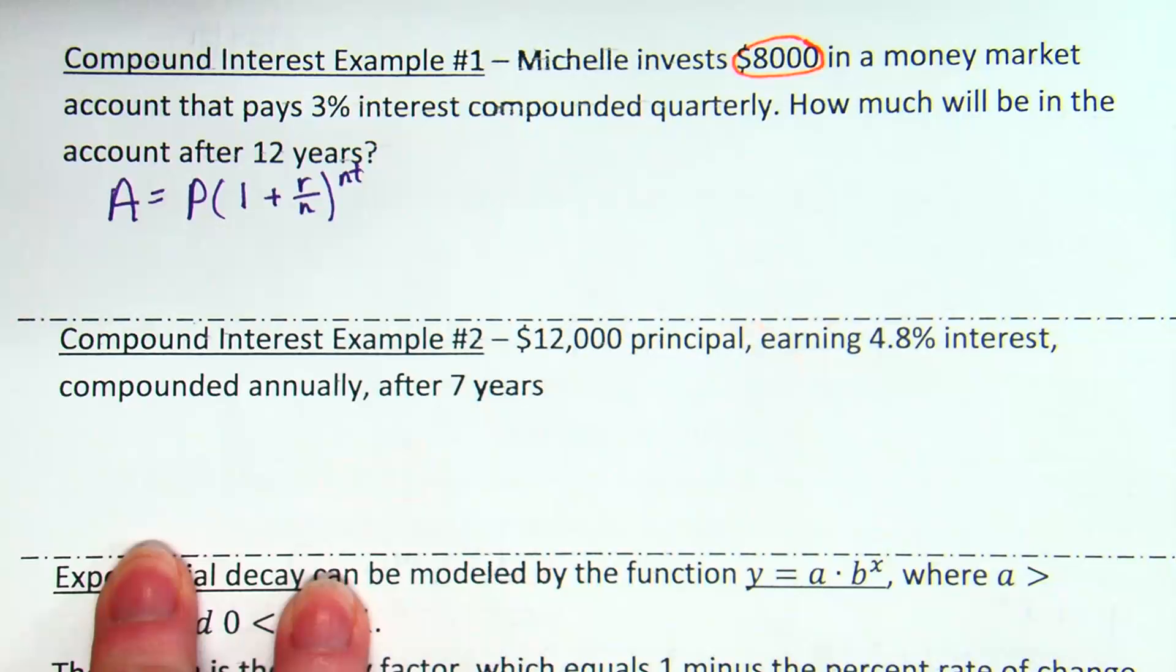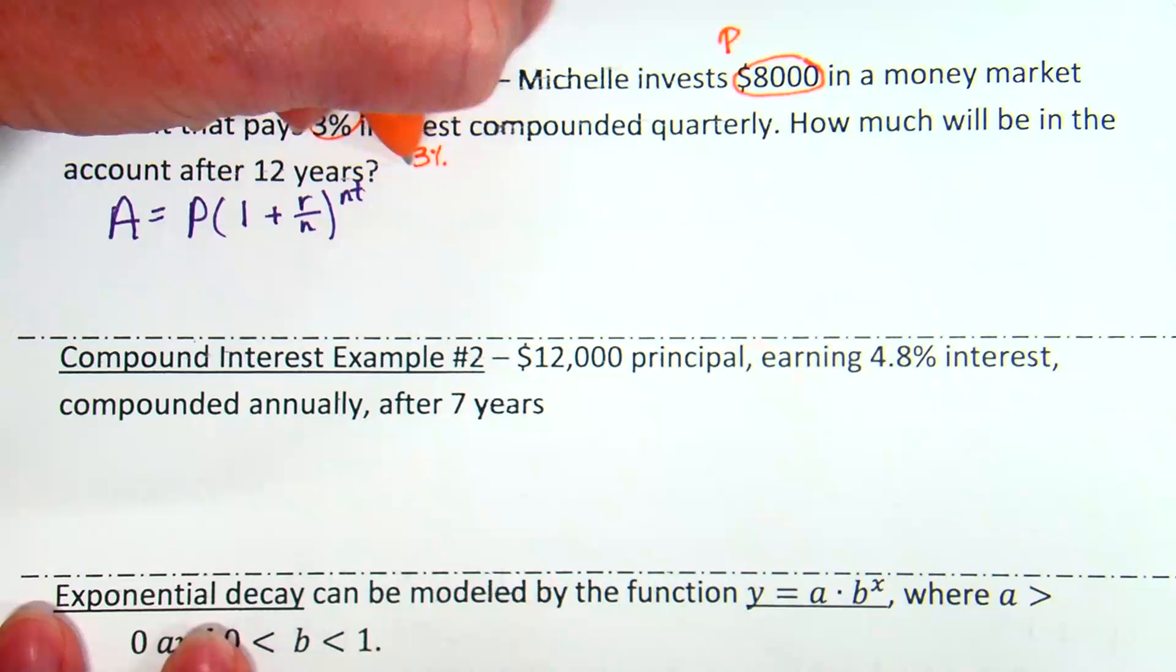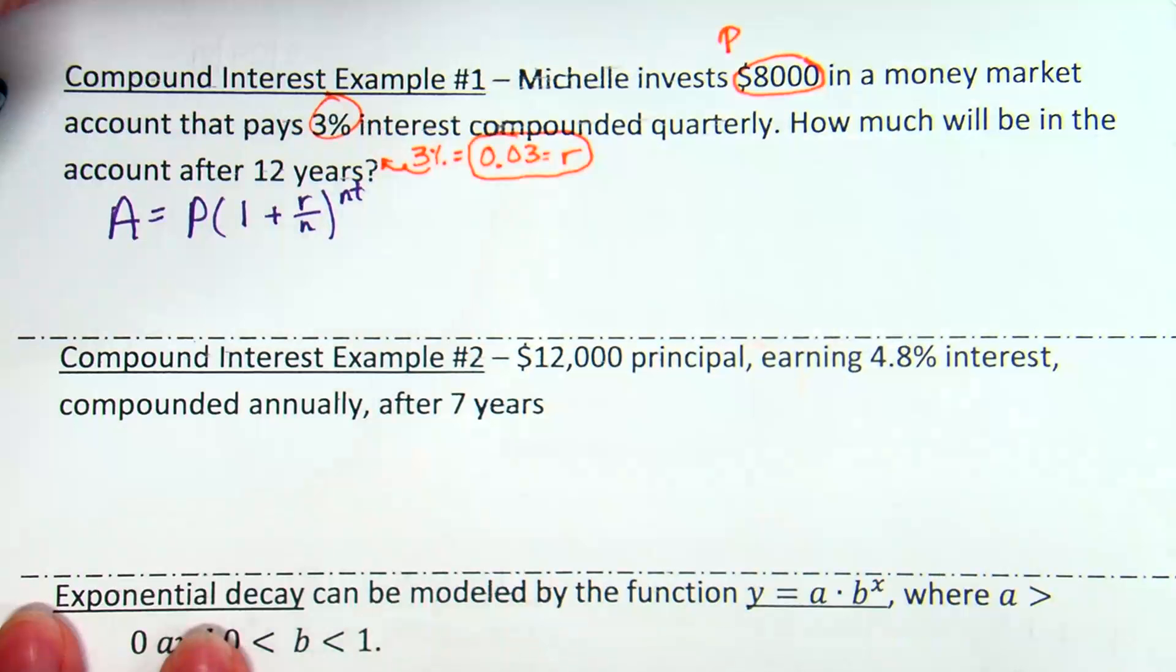Okay. 3%. What's 3% tell me? The decimal. And so, the decimal of 3% is. Okay. So, 0.03. And that is our R value. Okay. What else? Okay. So, 12 is going to go in place of. Oh, but 12 years is a time. So, T for time. There's one other thing we need to know.